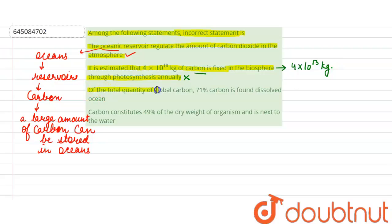Now the third statement is: of the total quantity of global carbon, 71% carbon is found dissolved in ocean. This statement is also correct because as we discussed, oceans act as a reservoir for carbon. About 71% of the carbon is found dissolved in oceans.